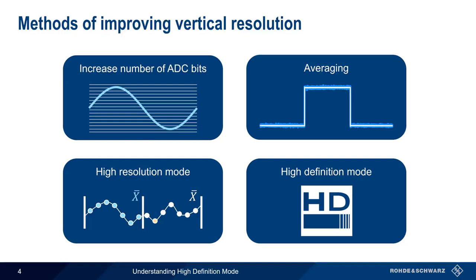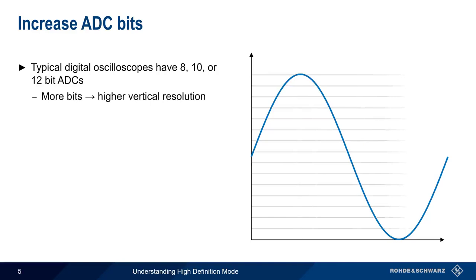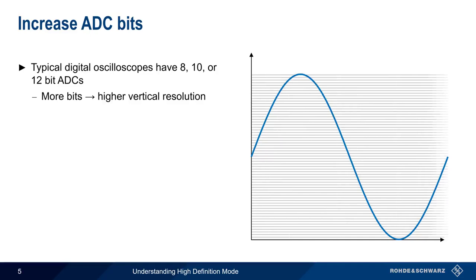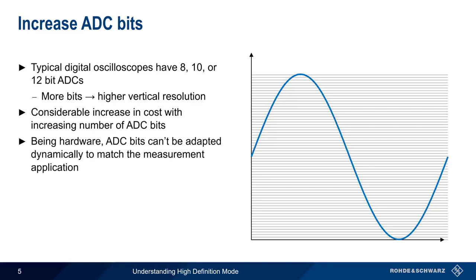Let's start by discussing ADC bits. Most modern digital oscilloscopes typically have 8, 10, or 12-bit ADCs. And as mentioned before, increasing the number of bits increases the number of quantization levels, and thus increases vertical resolution. However, there's also a very considerable increase in cost associated with increasing the number of ADC bits. In addition, since the number of ADC bits is set in hardware, it can't be dynamically adapted to the application.